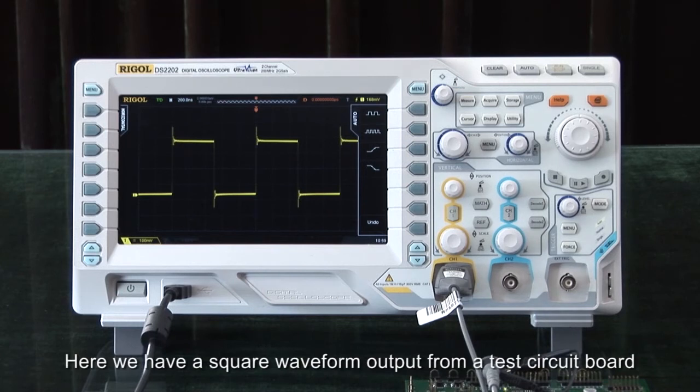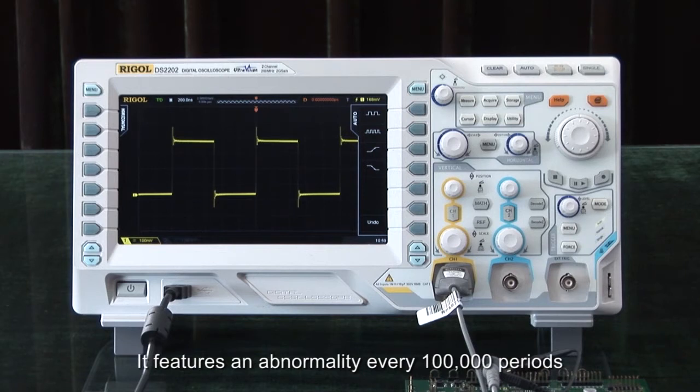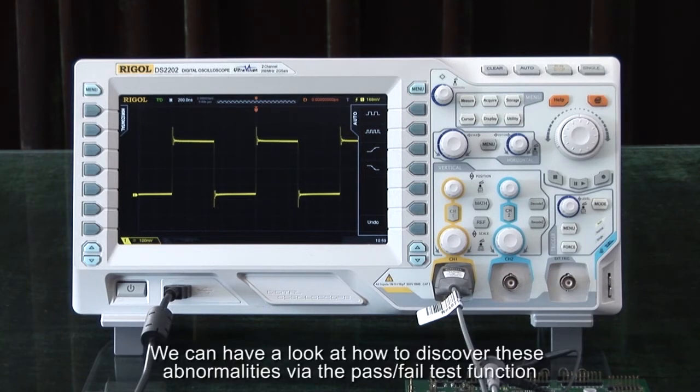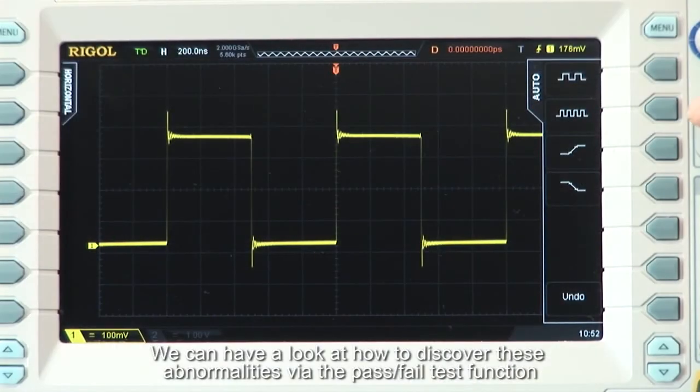Here we have a square waveform output from a test circuit board. It features an abnormality every 100,000 periods. We can have a look and see how to discover these abnormalities using the pass-fail test function.